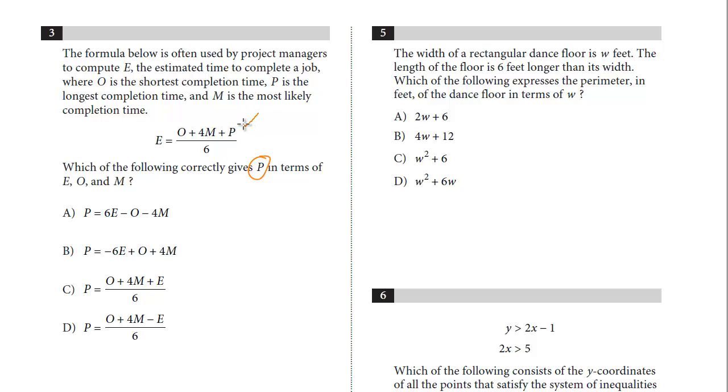So here's P. The first step is I'm going to multiply both sides by 6 to clear this denominator. So we get 6E equals O plus 4M plus P. Now we're just going to subtract O and 4M to isolate P. So then we get P equals 6E minus O minus 4M. That's it. And the answer is A.